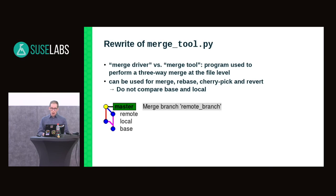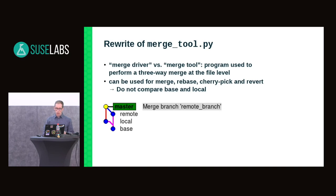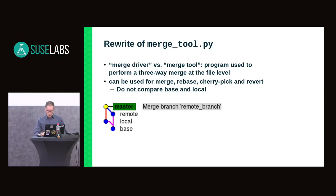However, for a cherry-pick there isn't necessarily a merge base. What Git does is pass the first parent of the commit being cherry-picked to the merge tool. This means there may be no link in history between the merge base and the local commit. Therefore, the merge driver should avoid comparing the base and the local. The correct approach is to diff between the base and the remote, then apply that diff to the local commit — no direct comparison of base and local. This is something the old merge tool was doing incorrectly, and it was changed in the rewrite.